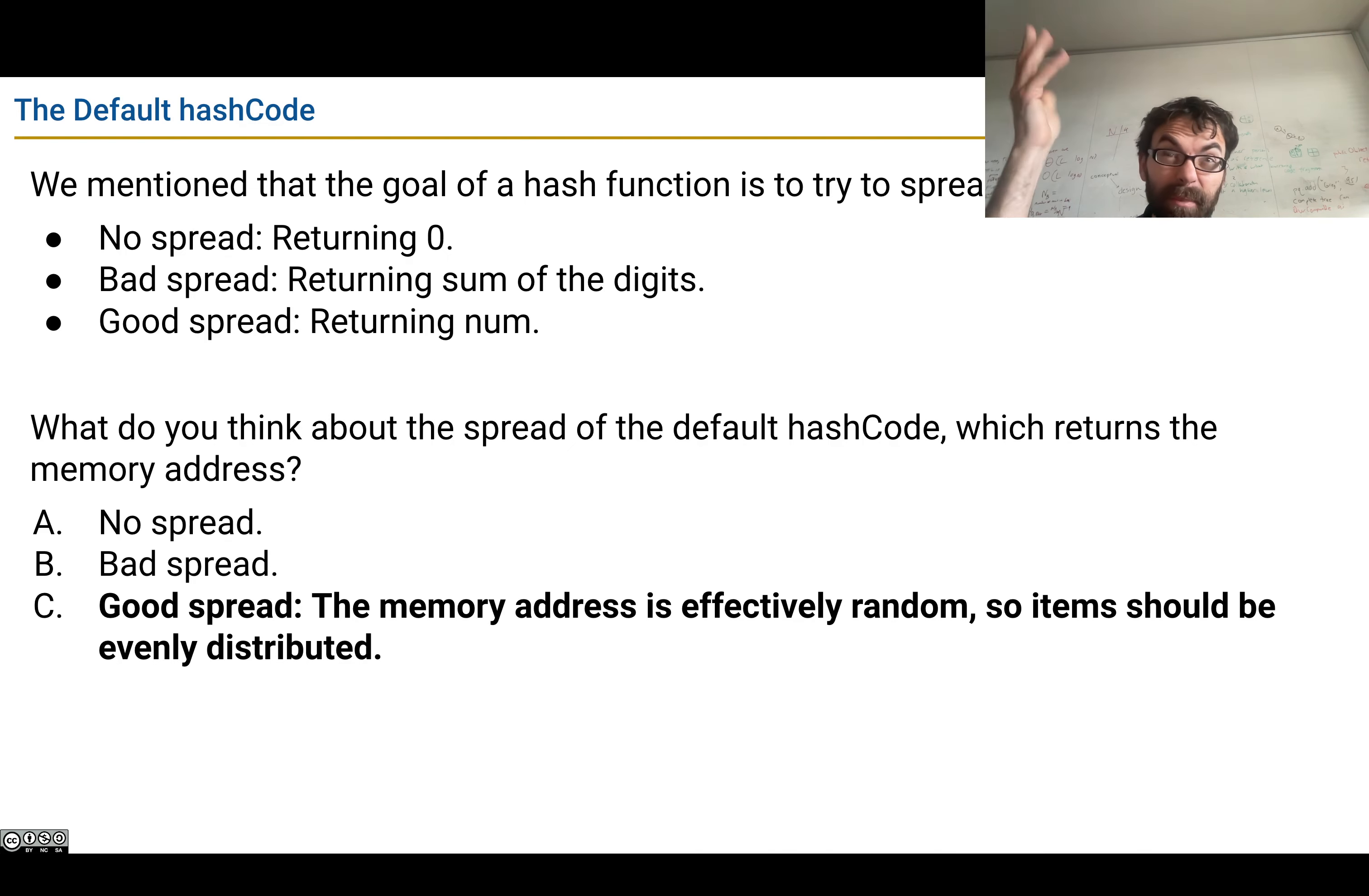When you create an object, it ends up somewhere in memory. Let's say you have five buckets. There's just as much chance of it ending up at a memory address which ends in 0, 1, 2, 3, or 4. Maybe that relies on some information about memory addresses that you don't have, but if you think of it as a totally random thing, items should be evenly distributed.